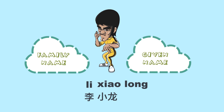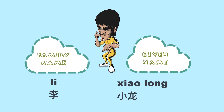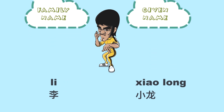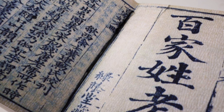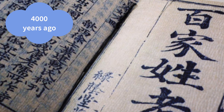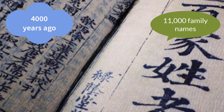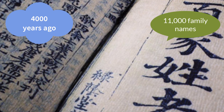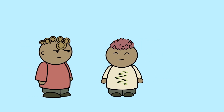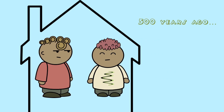Li is the family name and Xiaolong is the given name. The earliest Chinese family names date back to 4,000 years ago. There are almost 11,000 family names in history. People believe that if you meet someone who has the same family name as yours, you're from the same family 500 years ago.